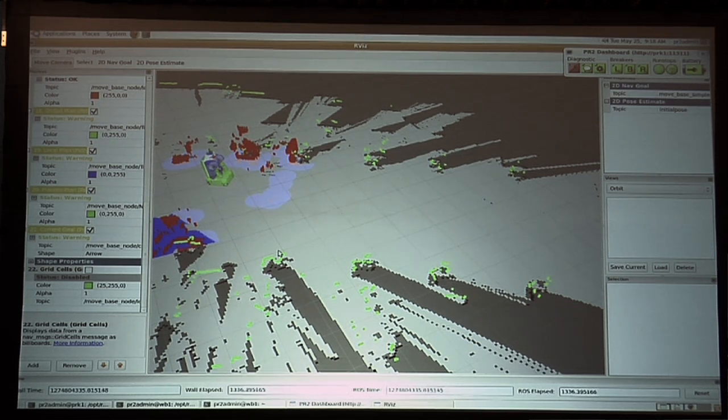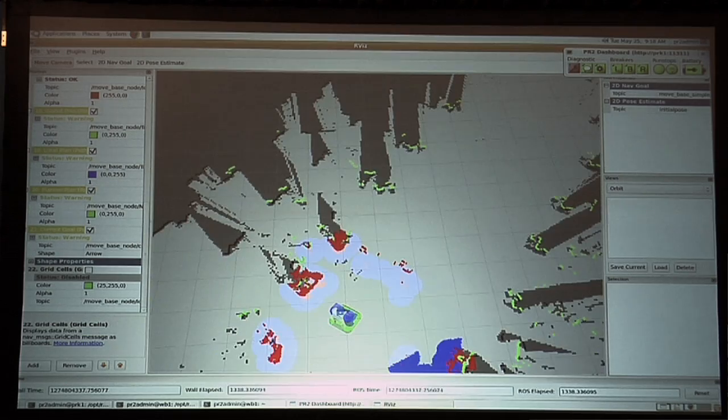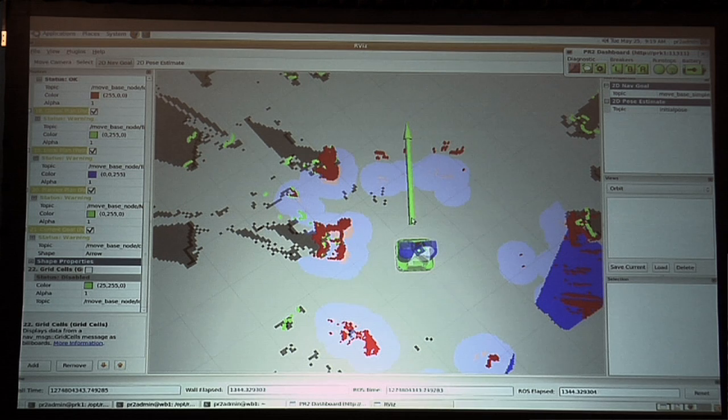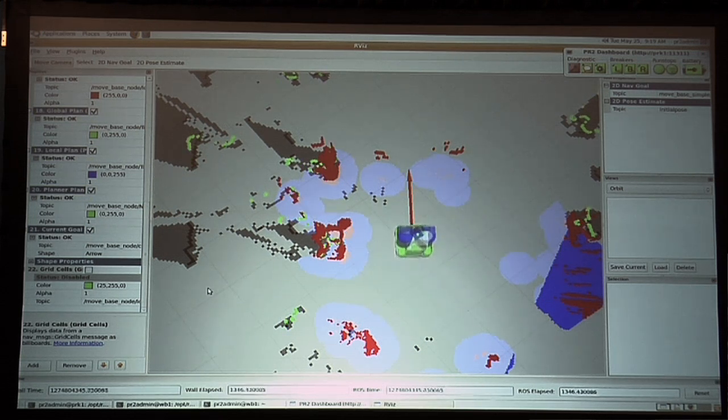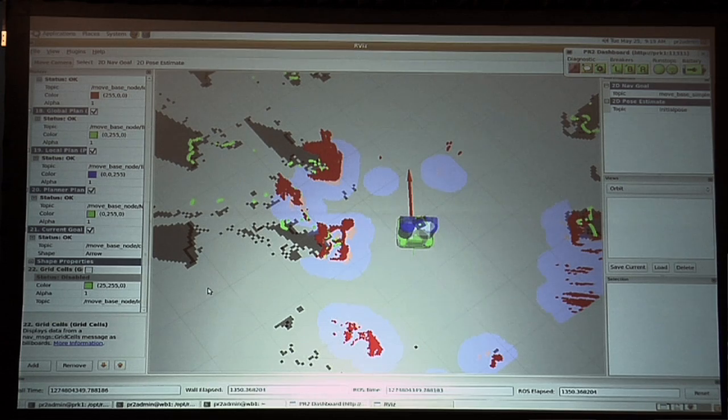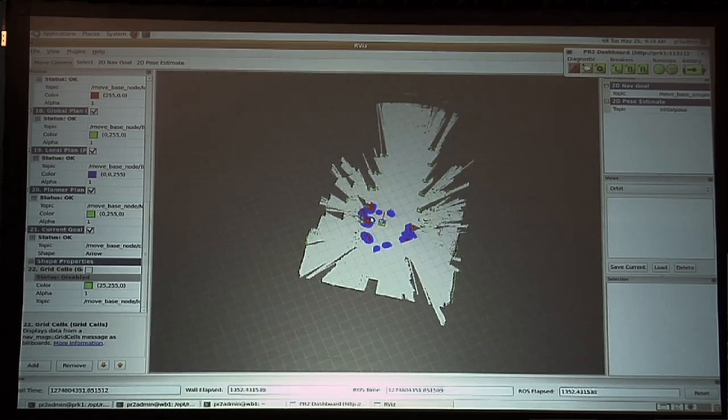And then the other thing I can do is I can use Rviz to send a goal to the navigation stack. So I can tell it to move just a little bit forward and it'll go where I tell it to. So you kind of get the idea. And also you can see that this is constructing a map. So it's kind of growing at the back end of the screen. So it is running SLAM to build the map.